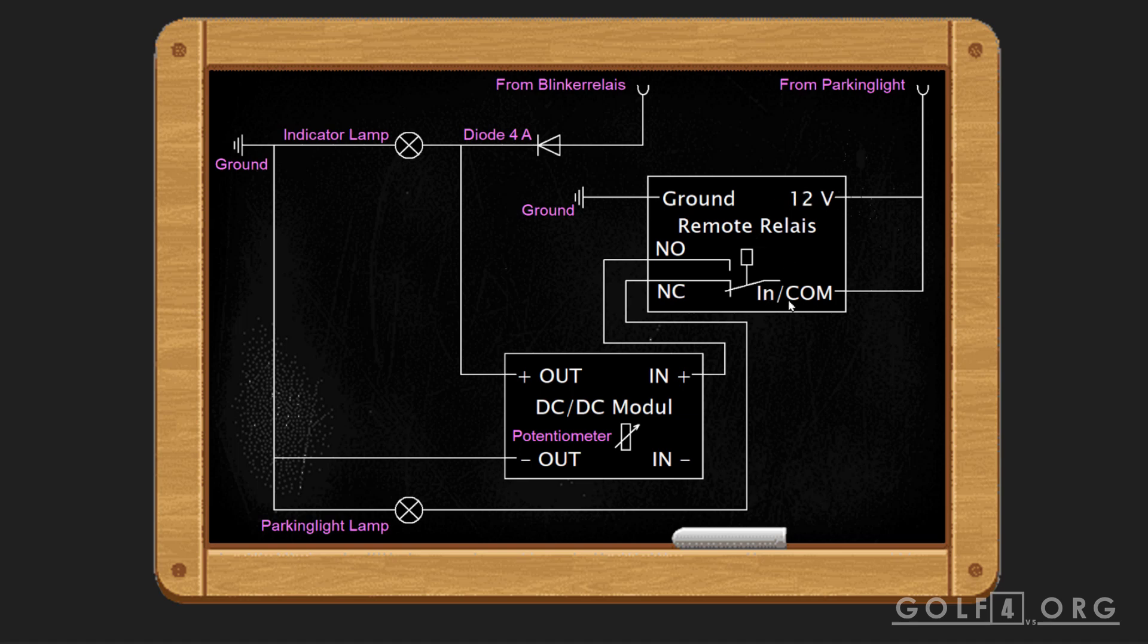From ground, we go to ground. This is just an extra ground because it's easier to understand. NO means normally opened, means this contact is opened. There's no voltage or nothing if the relay is not energized. NC means normally closed, means this is connected if the relay is not energized.